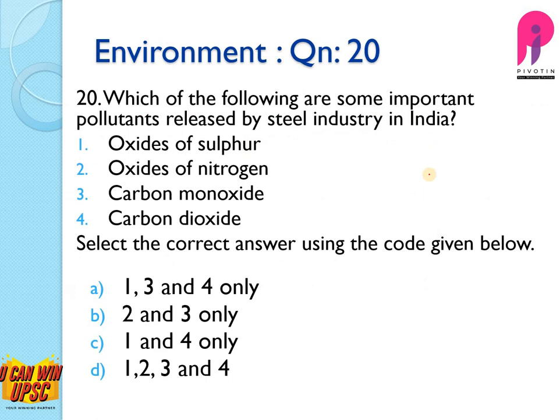Question 20: Which of the following are important pollutants released by the steel industry in India? All the options given are correct — the answer is D.